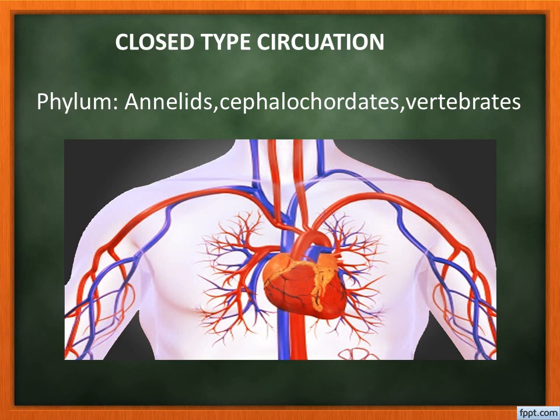So we have completed the first topic: level of organization, which consists of cellular level, tissue level, organ level, and organ system level of organization.